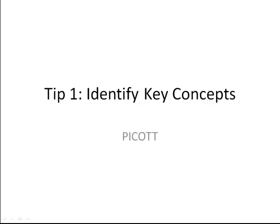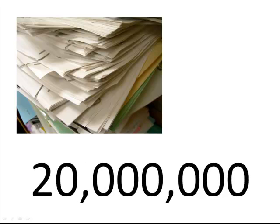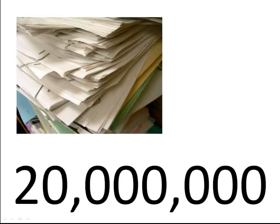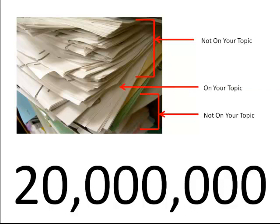Search tip number one: identify your key concepts. PubMed has over 20 million citations to articles, and it can be easy to be overwhelmed by citations that are not specifically on your topic. One way to ensure that you find relevant articles is to focus your topic using the PICOTT acronym. This is a mnemonic to help remember all the important parts of a clinical question.